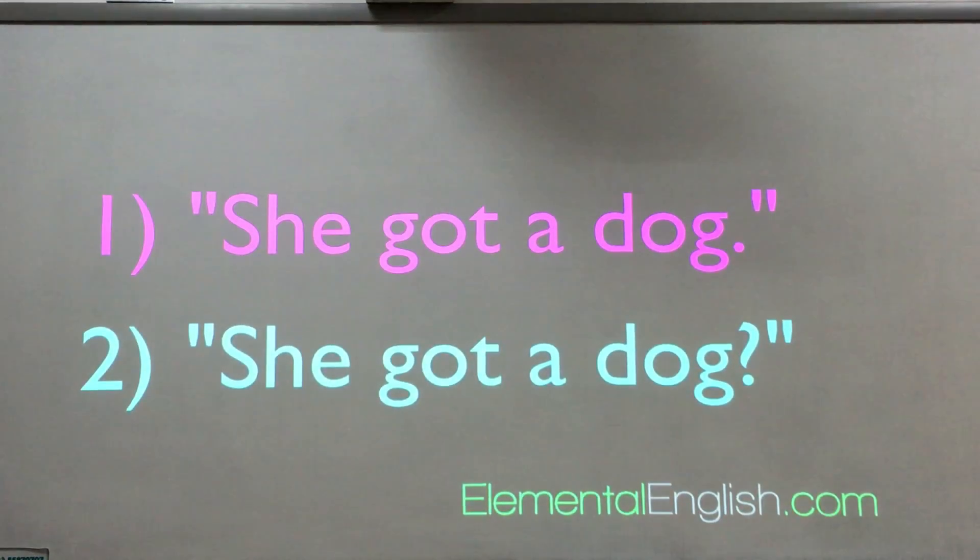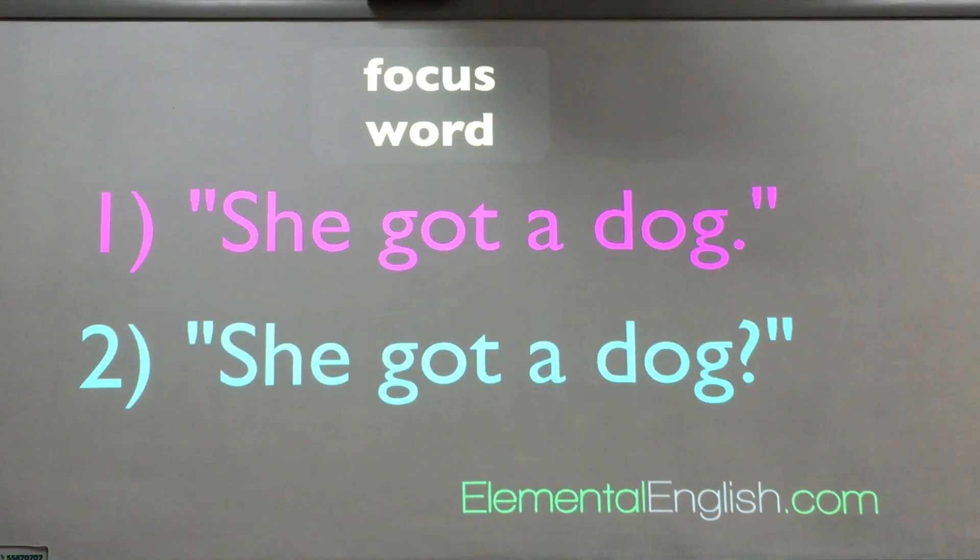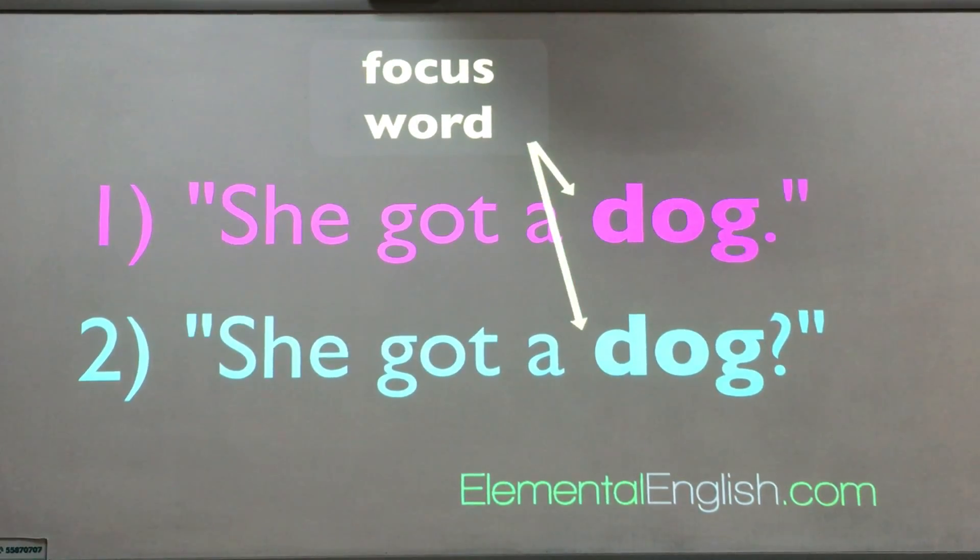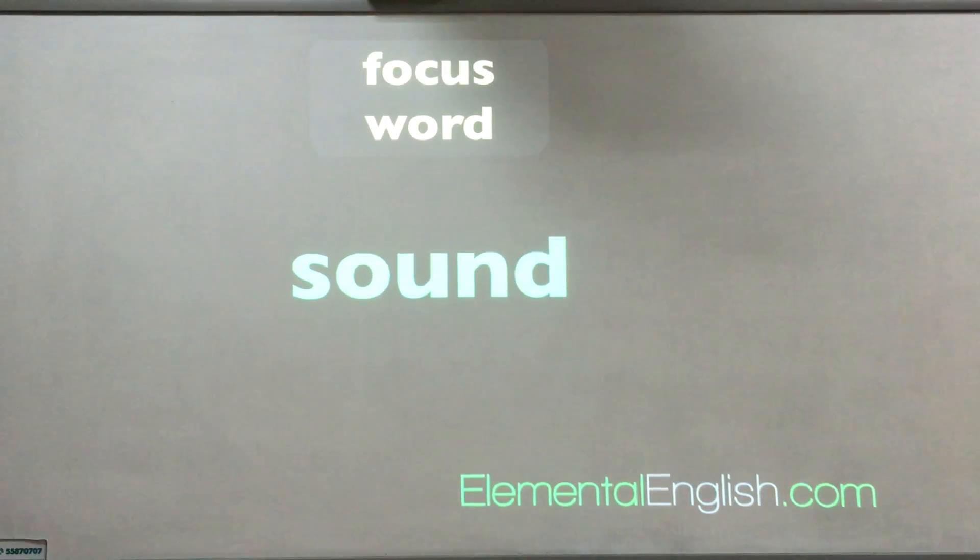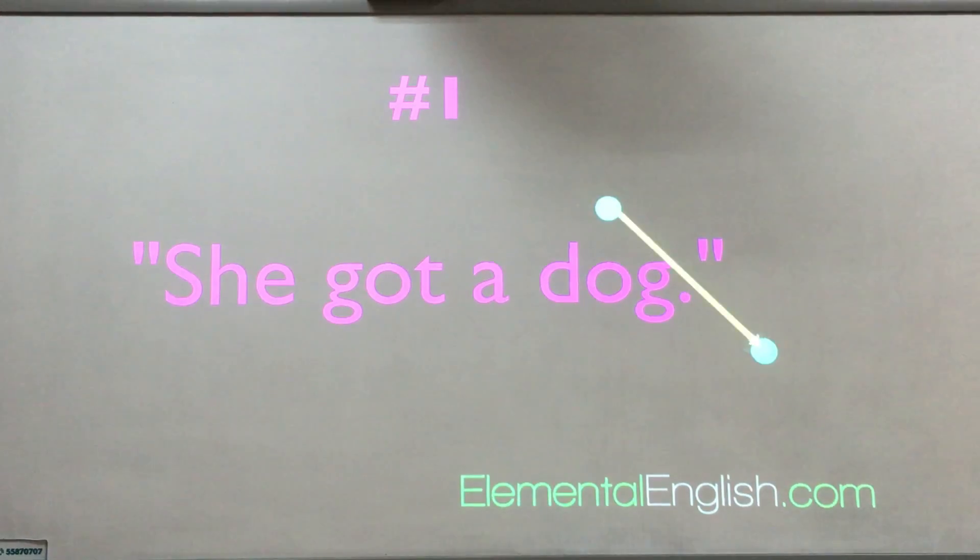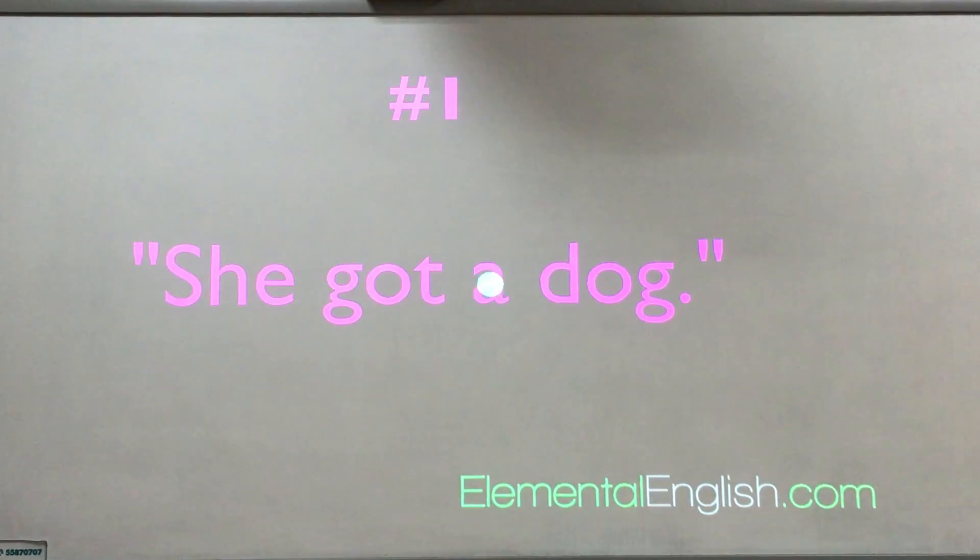In these two simple sentences, the focus word of the sentence, the word that gets the most emphasis, is 'dog.' But what happened with the sound of the focus word? In sentence one, the intonation went down to indicate the completion of the thought. 'She got a dog.'